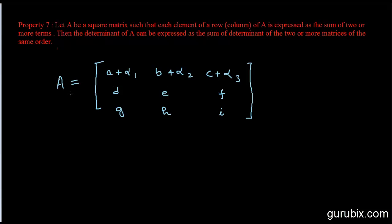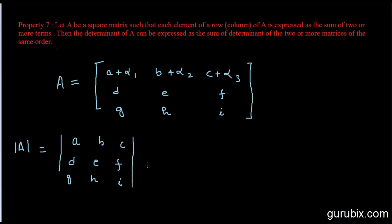Determinant of matrix A, इस determinant को हम दो determinants के sum के form में represent कर सकते हैं जिनका order same है। So determinant of A can be written as: determinant of the matrix [A, B, C / D, E, F / G, H, I] plus determinant of [α1, α2, α3 / D, E, F / G, H, I].